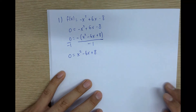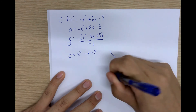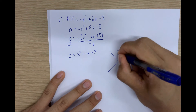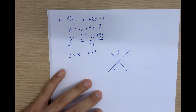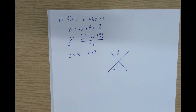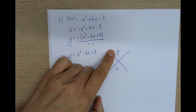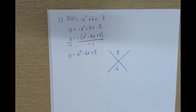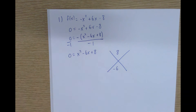Now we can use the diamond method as before. We put 8 on top and negative 6 on the bottom. We want two numbers that when multiplied equal the top number and when added equal the bottom number. Because the bottom is negative, we know one or both numbers will be negative. Because the top is positive, we know both of them are negative.